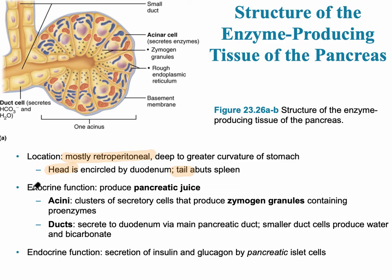The exocrine portion of the pancreas is the digestive portion. This pancreatic juice is able to break down the main nutrients: carbohydrates, fats, and proteins. The endocrine portion is the part that secretes insulin and glucagon.